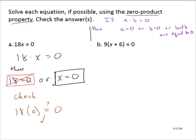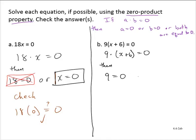Let's look at another example: 9 times x plus 6 is equal to 0. Notice the left-hand side is written as a product — 9 times (x plus 6) is equal to 0. You can write it with a dot if you need to. By the zero product property, 9 is equal to 0, or x plus 6 is equal to 0.